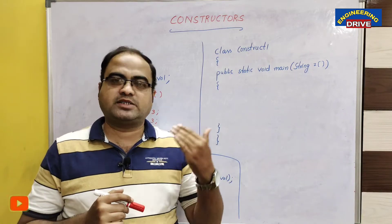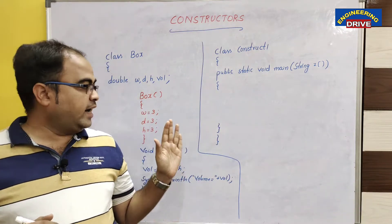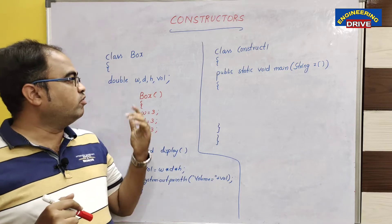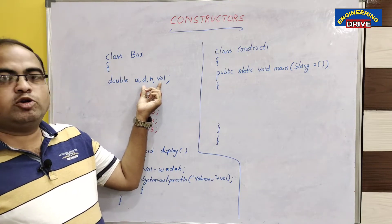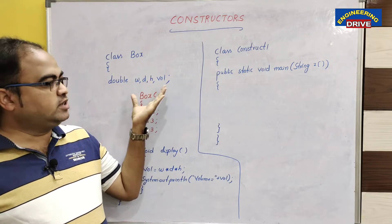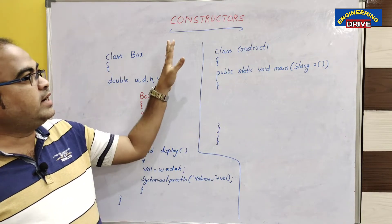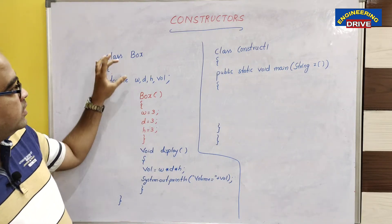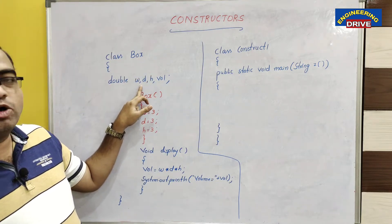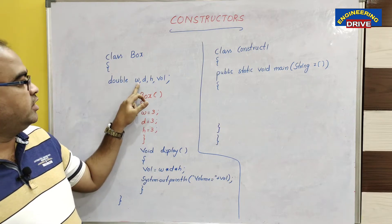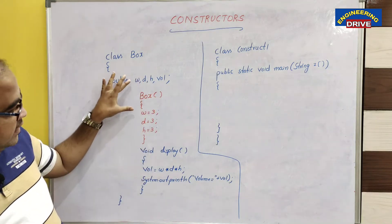I have discussed methods in my previous parts. Now, what is a constructor? You can see here there is one program I have taken, and in this program I want to calculate the volume of a particular box. The formula is width into depth into height. In this class named Box, I have declared four variables of double data type: w, d, h — that is width, depth, height — and volume to store the volume.